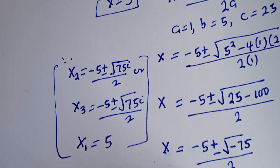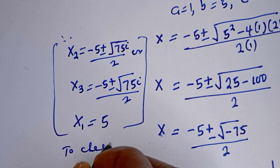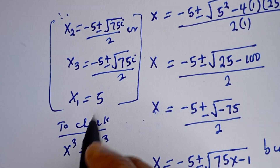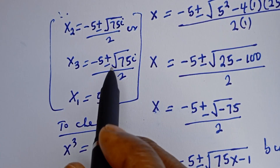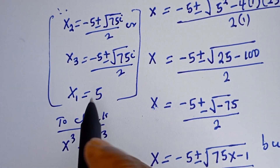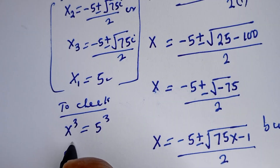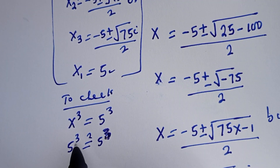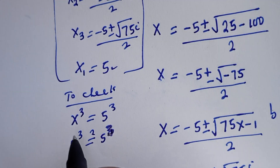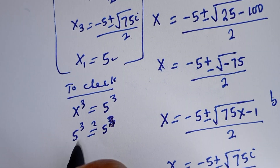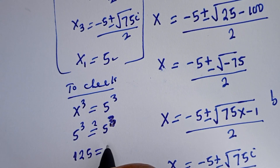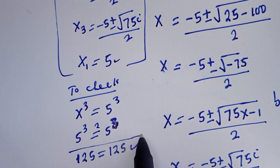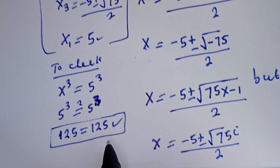Let's check using the given equation S to the power of 3 is equal to 5 to the power of 3. Since the other two solutions are complex or imaginary, we verify using the real solution S equals 5. We have 5 to the power of 3 is equal to 5 to the power of 3, and 125 is equal to 125, which is true. I hope you enjoyed the video — please don't forget to like, share, comment, and subscribe to my channel. Thank you, bye bye.